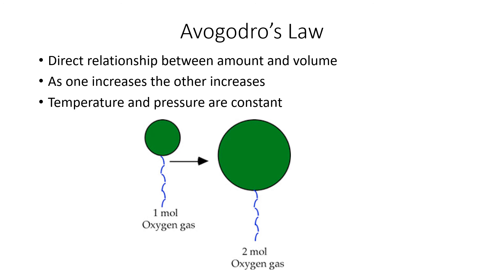The last of these gas laws is Avogadro's law — the direct relationship between amount and volume. In a direct relationship, as one increases, the other increases; if one goes down, the other goes down. Temperature and pressure are held constant. A good example is a balloon: when you blow more air into a balloon, the volume gets bigger. When you let air out of a balloon, the volume gets smaller. That direct relationship is Avogadro's law.